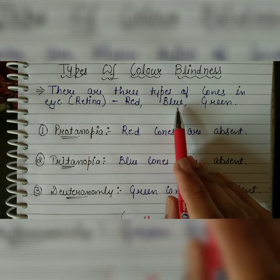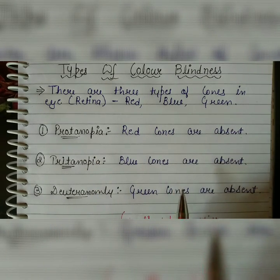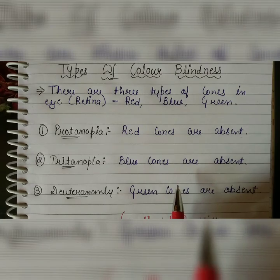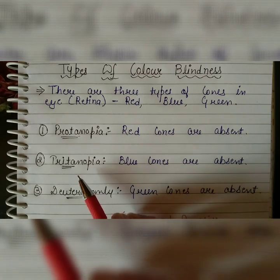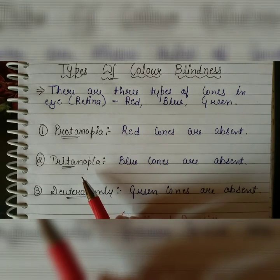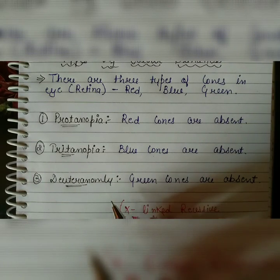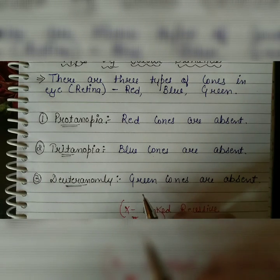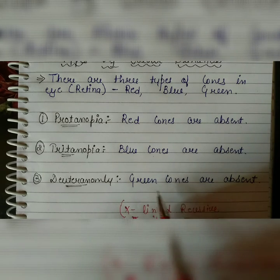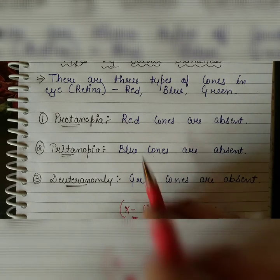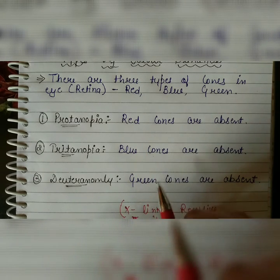The person suffering from tritanopia has absent blue cones in the retina. The third type is deuteranomaly — a person suffering from deuteranomaly lacks the green cones in the retina of their eyes.